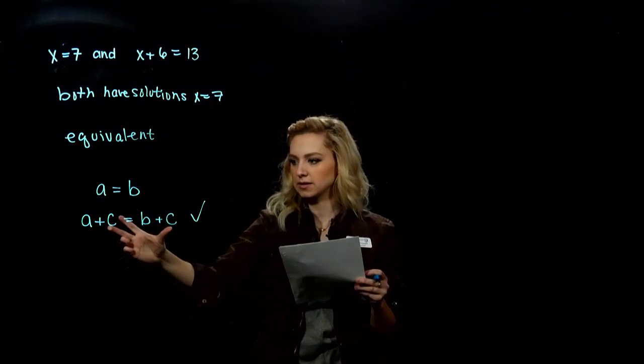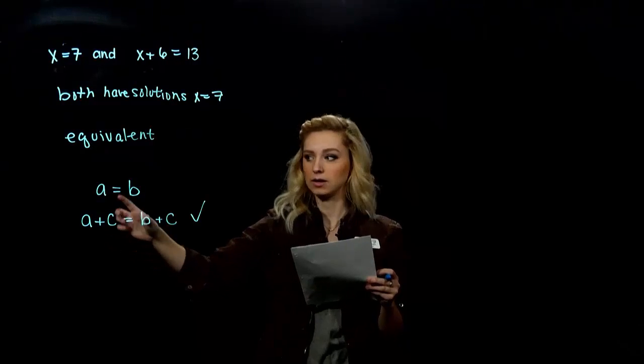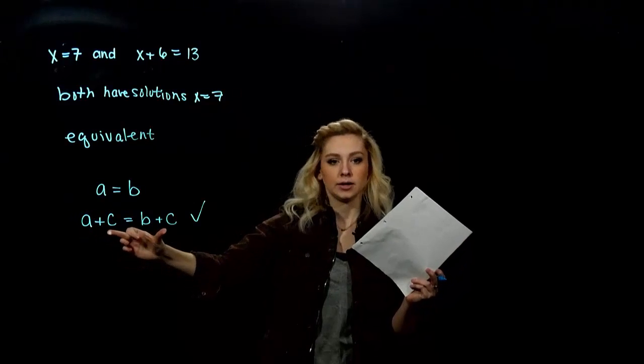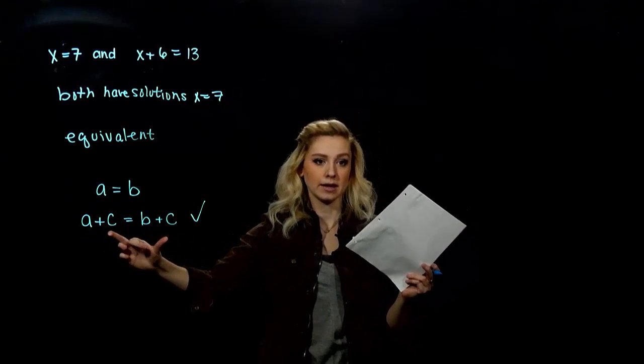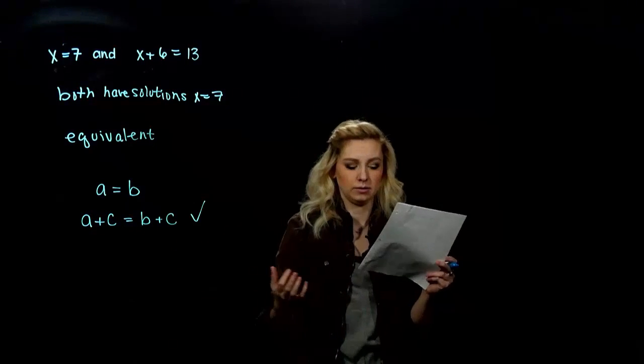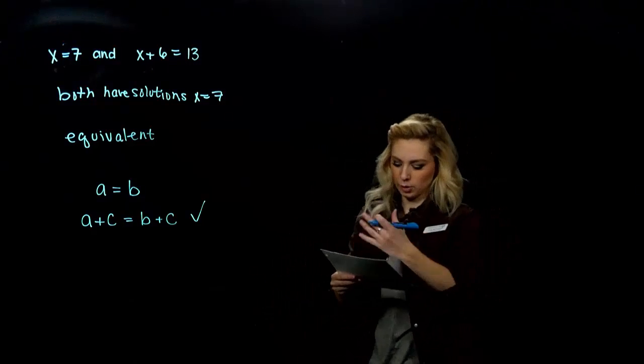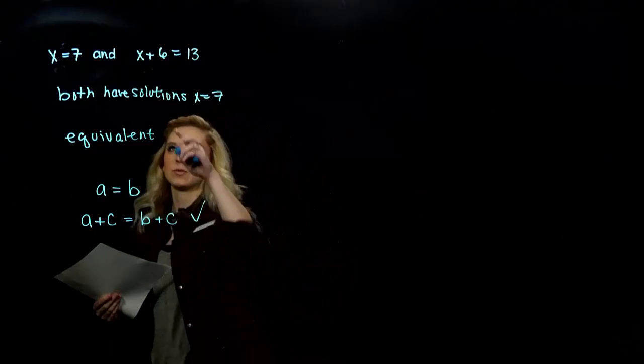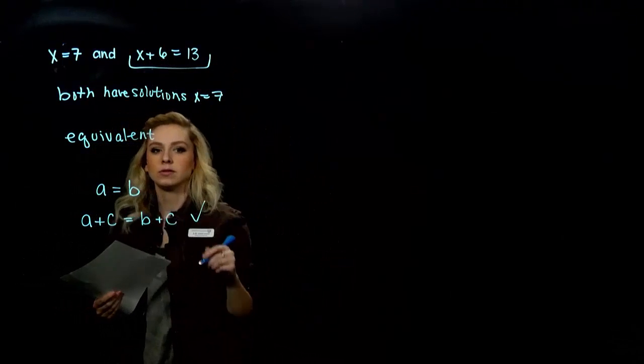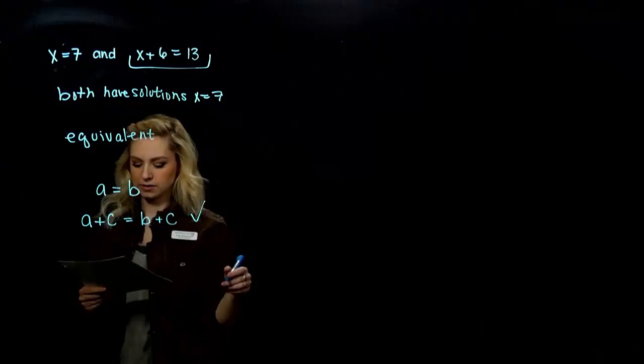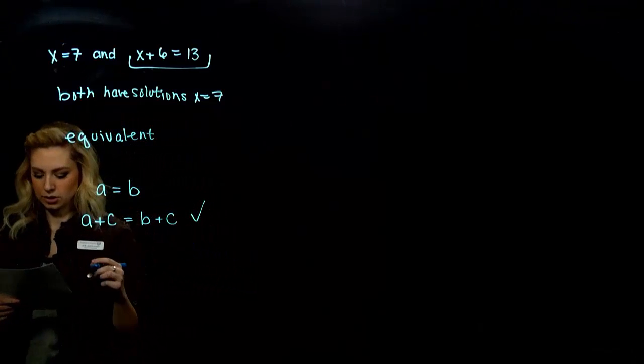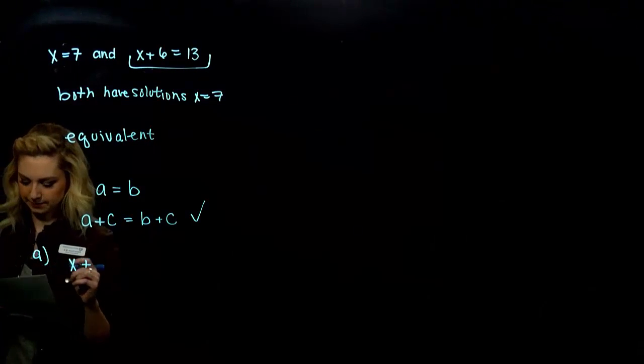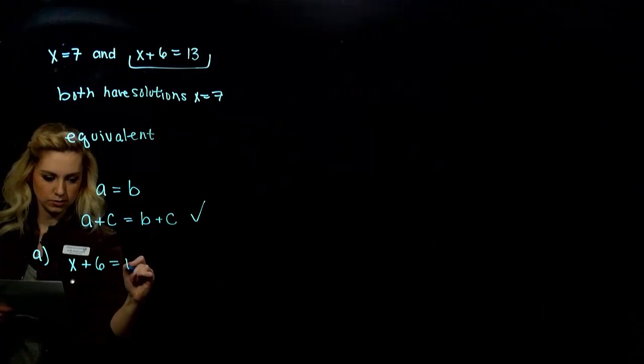So we can work in both orders. If I have something that's in common on both sides, I can remove it, and I get an equivalent equation that's simplified. Or if I take something that's true, I can also add something to both sides, and it's still equivalent. So we're going to take this example again. We know the solution, but let's solve it using this new addition principle for equations.